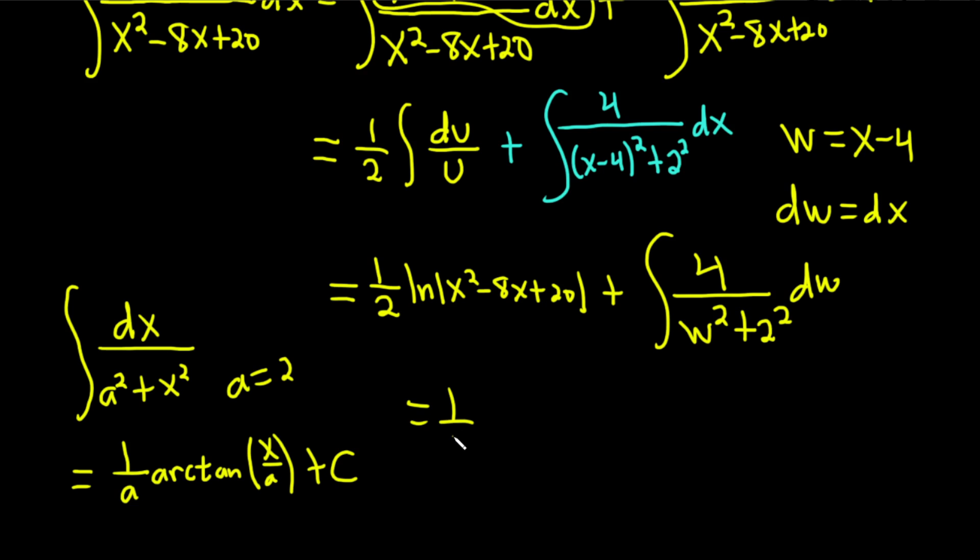This is equal to 1 half ln absolute value x squared minus 8x plus 20. And then this 4 hangs out, so we get 4. But it's 4 over 2 because it's 4 times 1 over a, so 1 over 2, arc tangent w over 2 plus C.